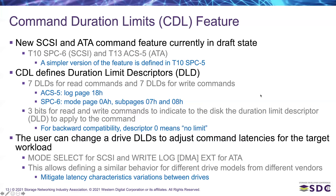In addition to these descriptors, three bits are added to the read and write command control blocks. These three bits indicate to the disk the duration limit descriptor to apply to the command. Descriptor zero means no limit — so with these three bits at zero, there is no limit, as today. Values one to seven point to one of the seven descriptors for each command type — read or write.